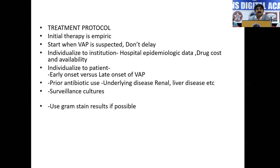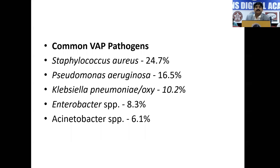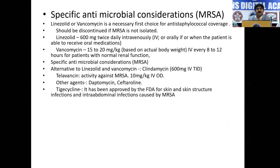Individualize to the patient: whether early or late onset VAP, prior antibiotics, always consider drug dose modification based on underlying liver or kidney problem, and try to know the surveillance culture. Commonest pathogens encountered in the ICU are Staphylococcus aureus at 24.7%. In India, it is more gram-negative organisms — Klebsiella, Enterobacteriaceae, and Acinetobacter. For MRSA, always try to treat with Linezolid or Vancomycin; vancomycin is the first drug of choice and should be discontinued once MRSA is not isolated.